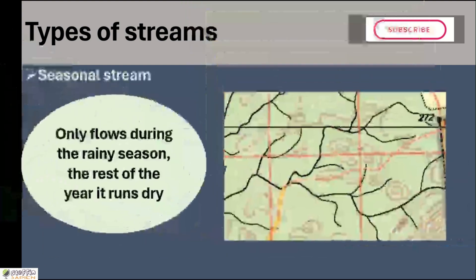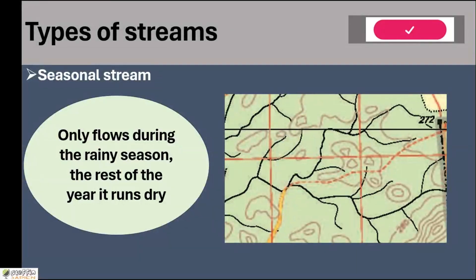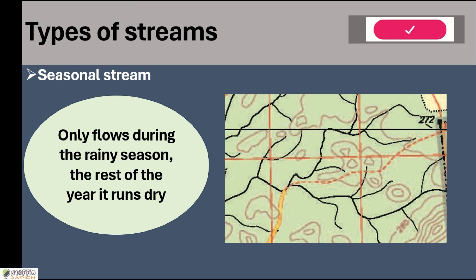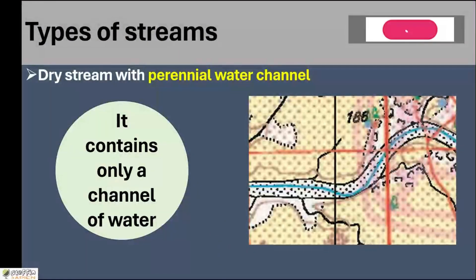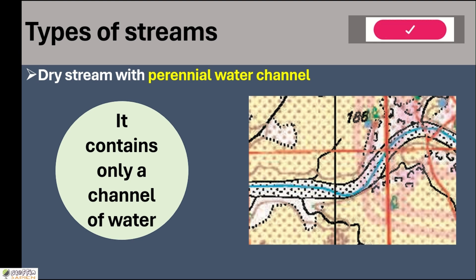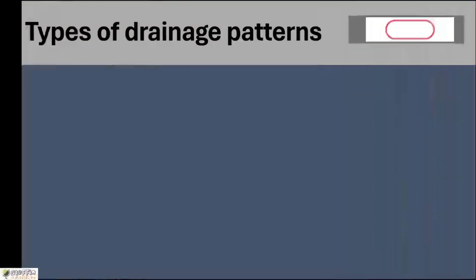The second type is seasonal streams or dry streams. These are streams that flow only during rainy season and remain dry for the rest of the year. These streams are drawn using black color. The third category is called dry streams with perennial water channel — a few large rivers which are dry but have a perennial channel flowing through the middle throughout the year.